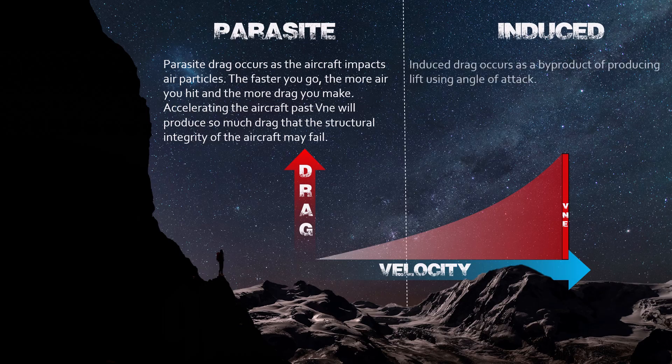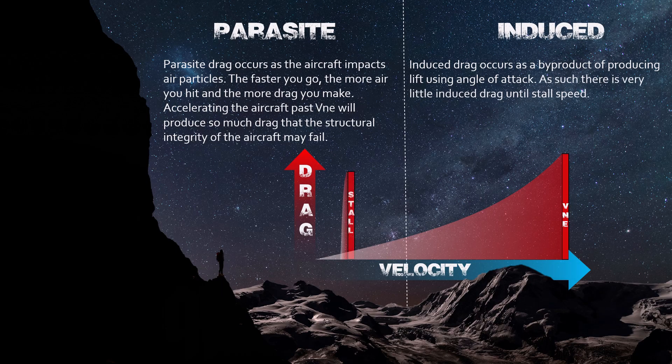Induced drag occurs as a byproduct of producing lift using angle of attack. As such, there is very little induced drag until stall speed. After stall speed, induced drag gradually decreases as angle of attack is reduced.